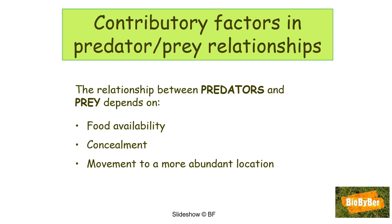Now we're in a position to consider the contributive factors involved in predator-prey relationships. The delicate balance between predators and prey depends on the availability of food, concealment or camouflage, and movement to a more abundant location. Let's look at each of these in turn.